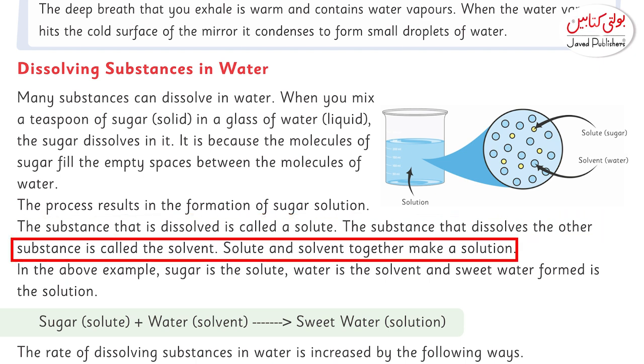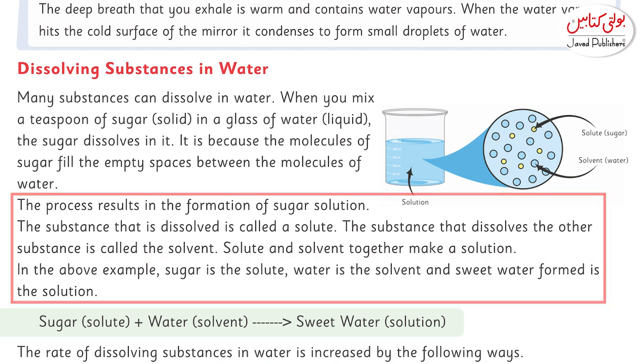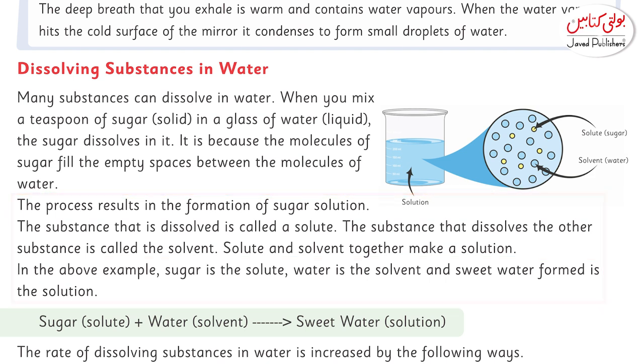Solute and solvent together make a solution. In the above example, sugar is the solute, water is the solvent, and the sweet water formed is the solution.